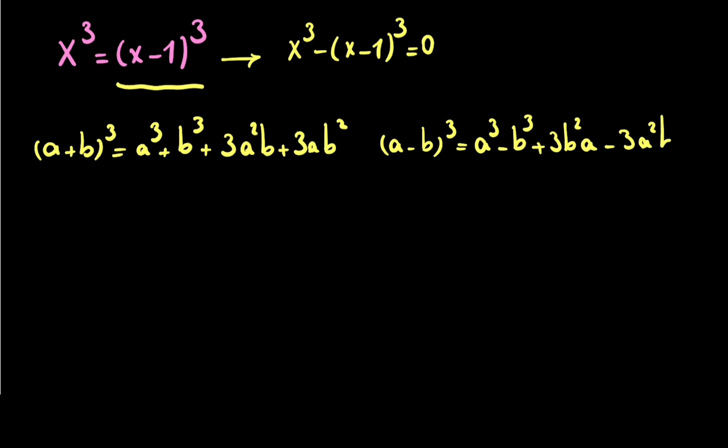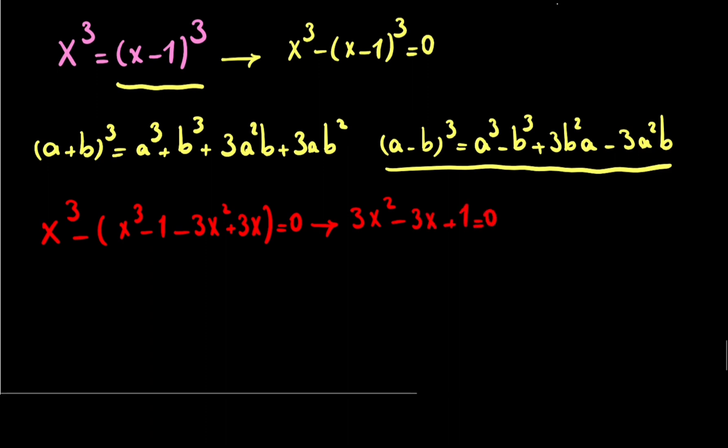According to this point, you can write X³ minus (x³ - 1 - 3x² + 3x) = 0. This equation will be like 3x² - 3x + 1 = 0. So here we have a nice quadratic equation.